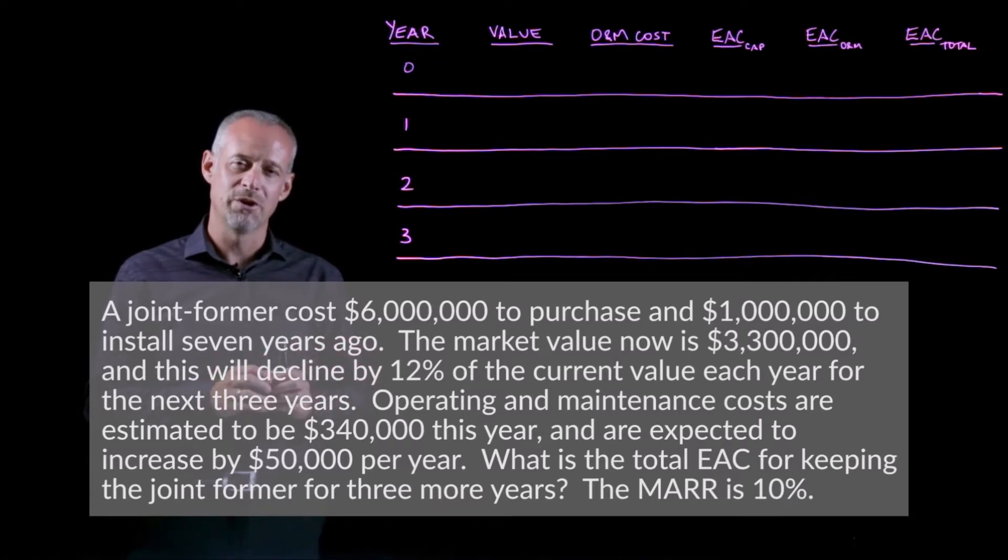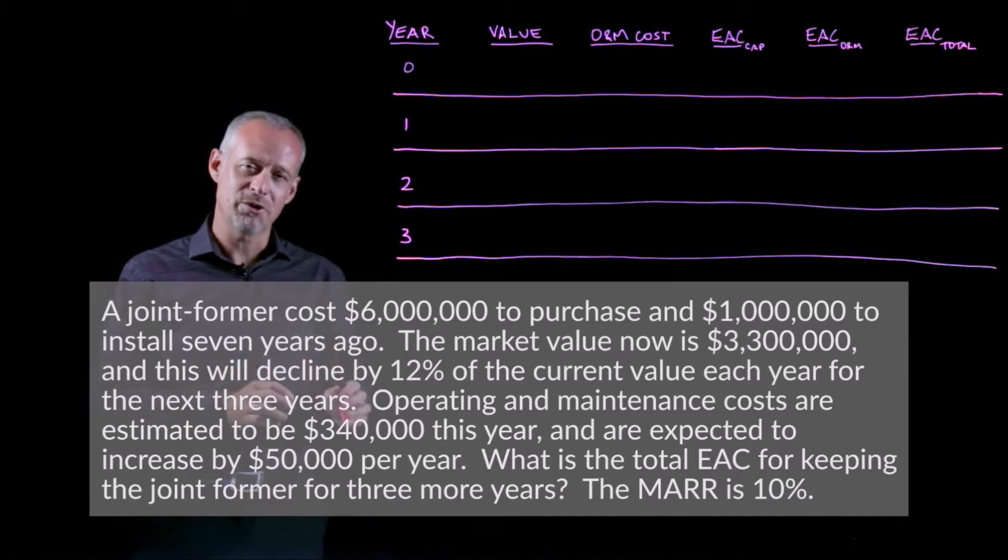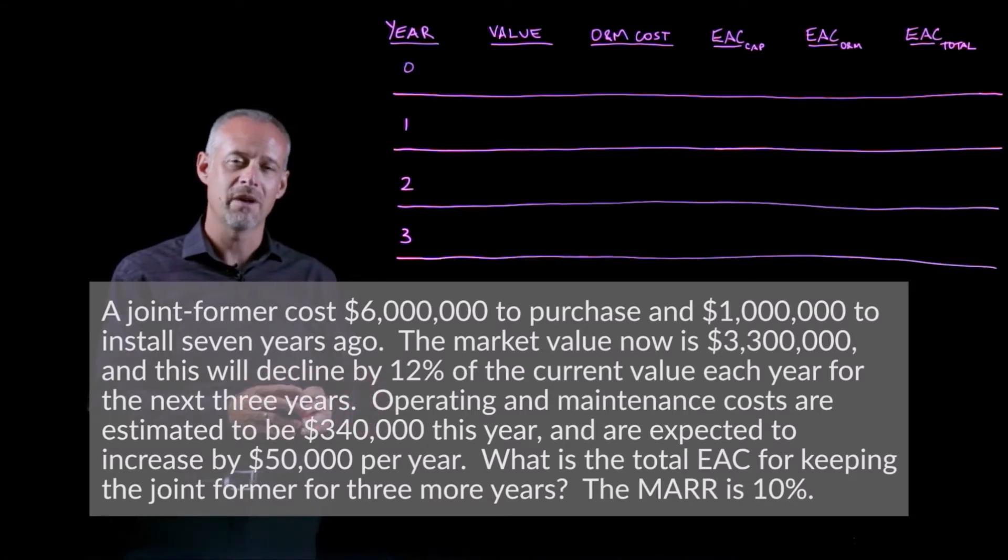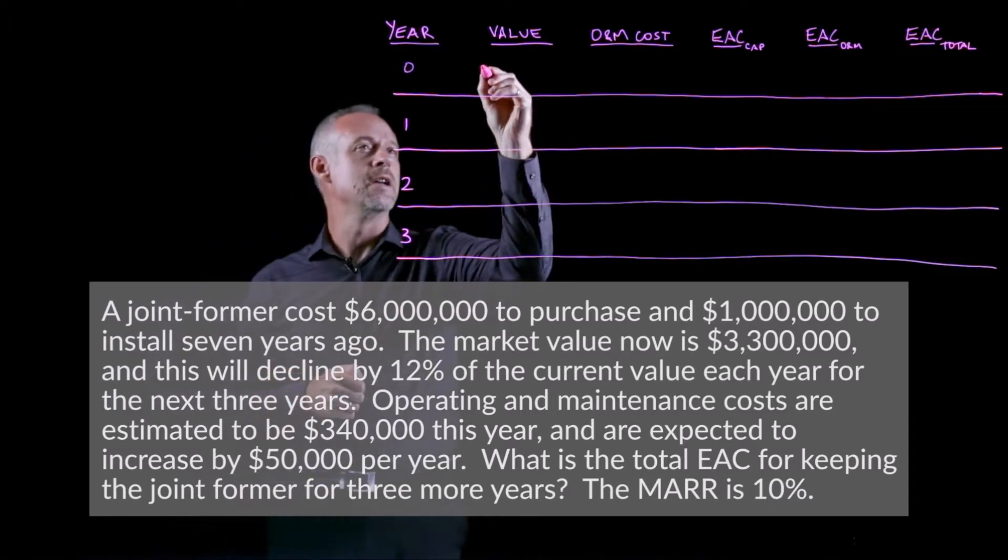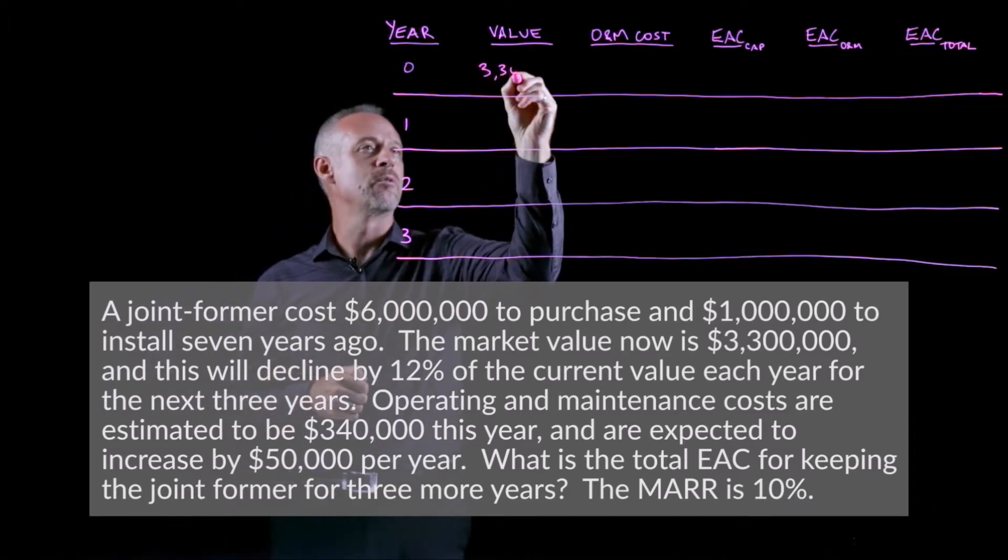It doesn't go against the rules of engineering economics, however. So a little bit of a trick question. The question sets up the six million dollars, the one million dollars as if it's very important and that you need to use it. However, you don't. What's really important is the value of the equipment today. And we're told in this problem, the value of this joint former today is $3.3 million.